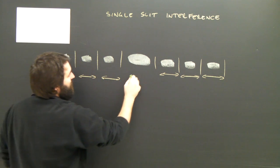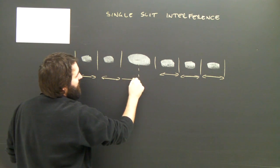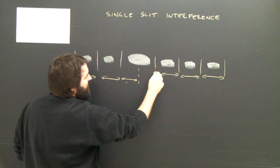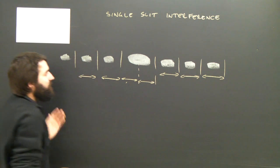But the central maximum was twice as wide. So between the center, there was this distance twice.